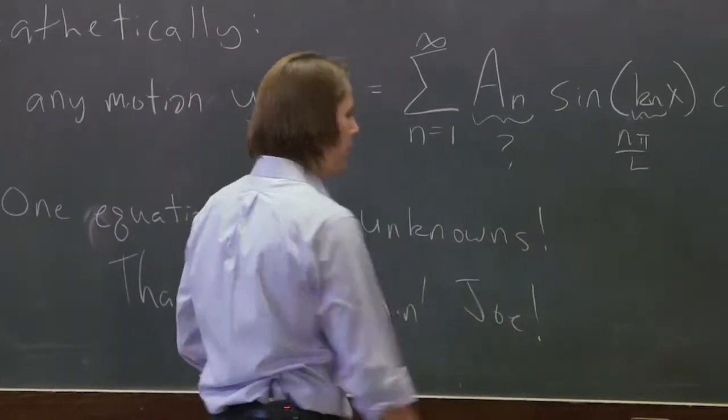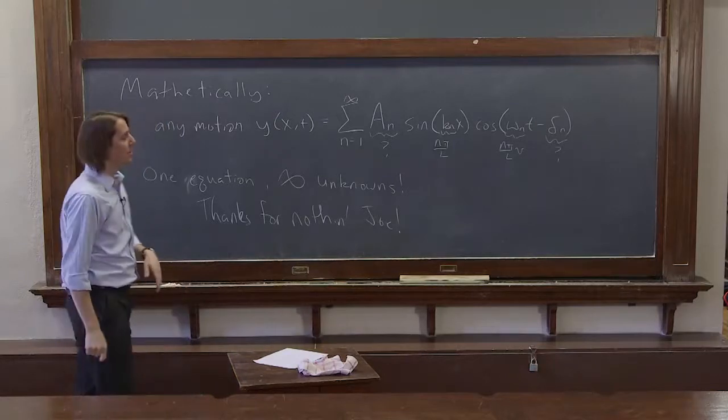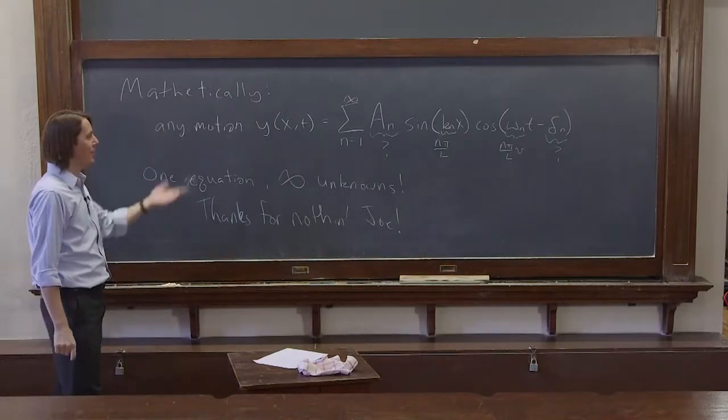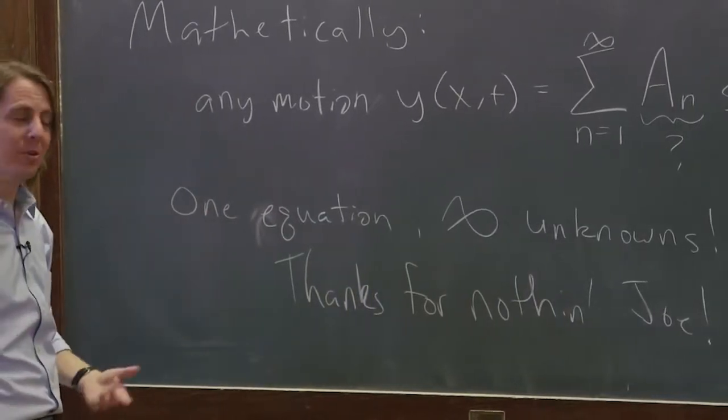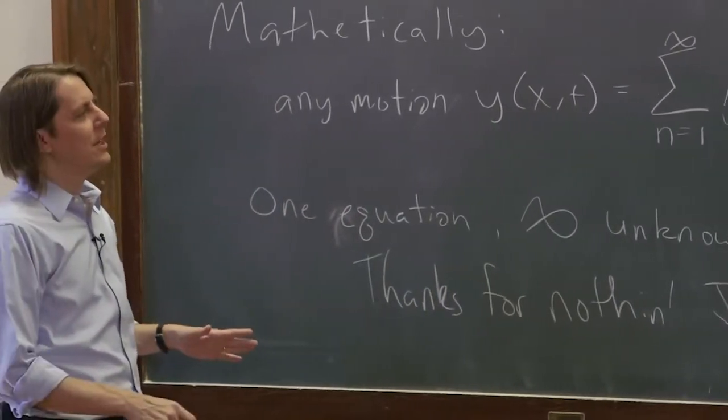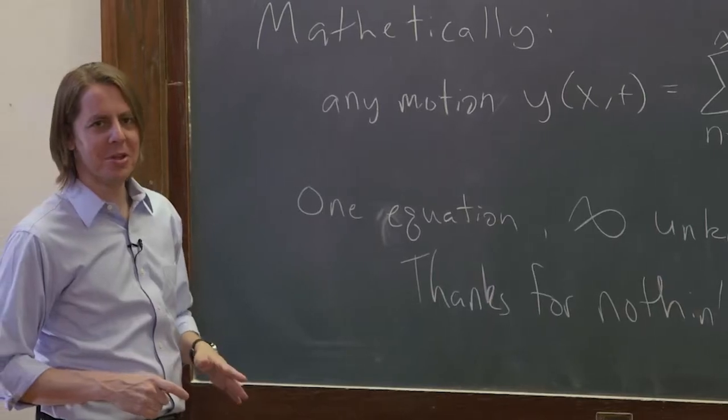Because typically you need as many equations as unknowns to figure anything out, here we have the worst possible situation. I guess we could have zero equations and infinity unknowns, that would be a little bit worse. He must have thought of something else to improve this.